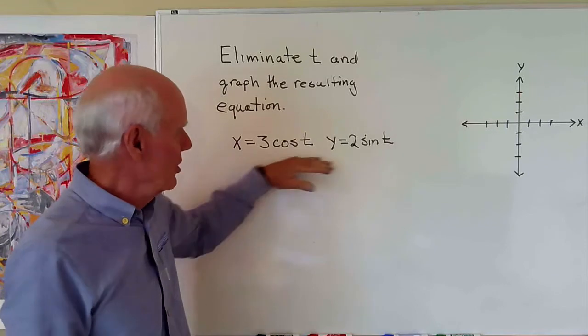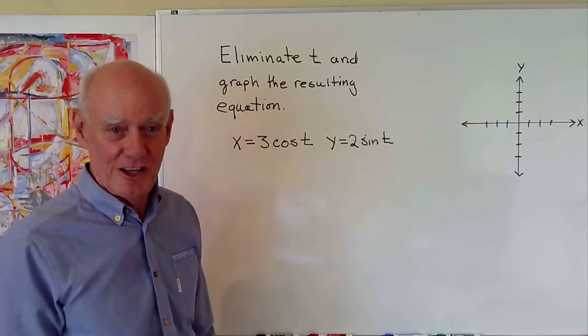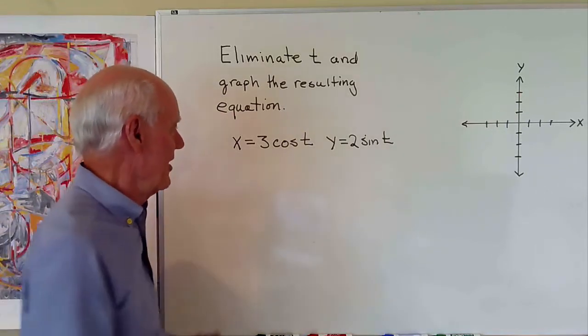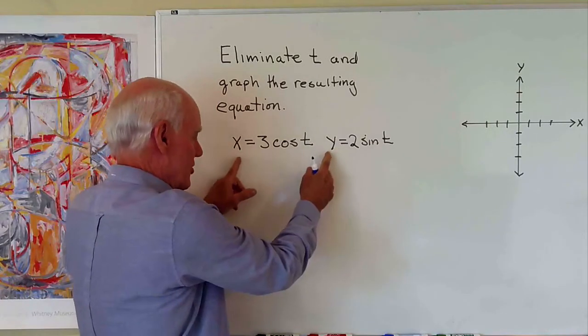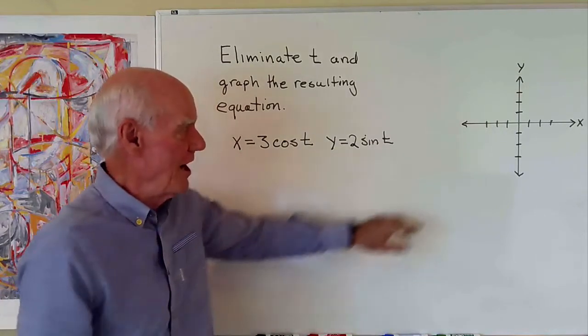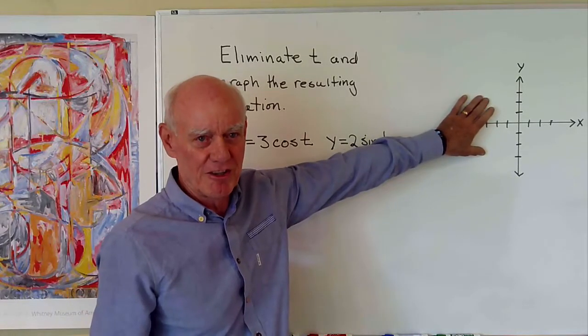Now what you're going to see is that this comes out to be an ellipse and when you graph it, you could find that out by simply substituting values in for t and seeing what you get out for x and y and then graphing them on the rectangular coordinate system.